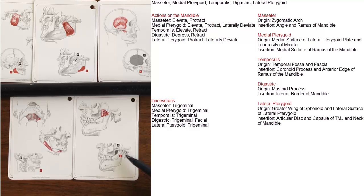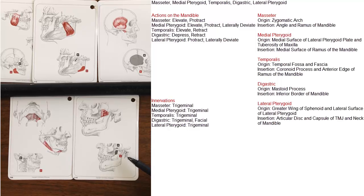For the lateral pterygoid, its origin is on the greater wing of the sphenoid and the lateral surface of the lateral pterygoid plate. It inserts on the articular disc and capsule of the TMJ joint and the neck of the mandible.